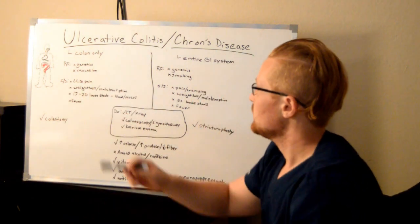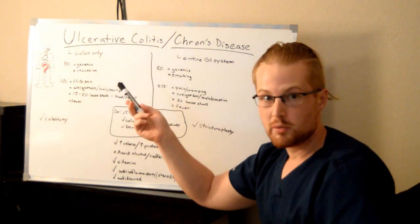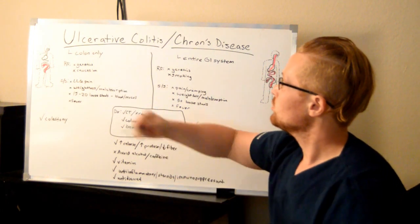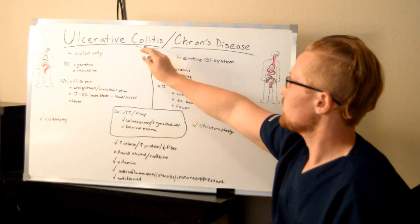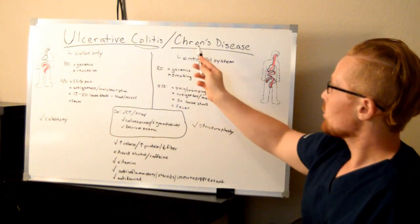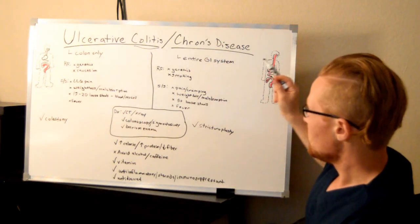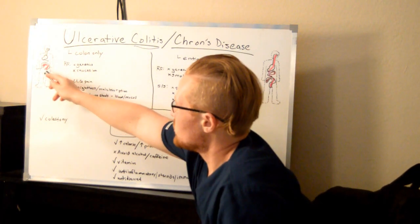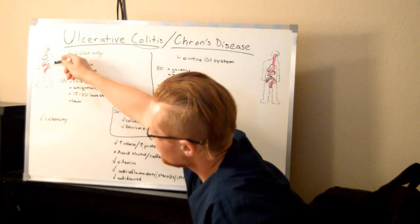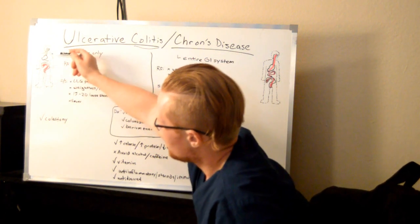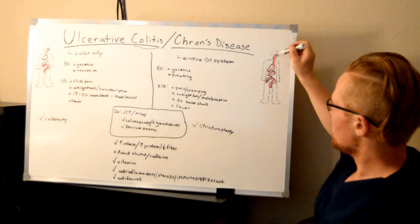When I talk about Ulcerative Colitis, the difference between the two would be that Ulcerative Colitis affects only the colon — and it says it right in the name, Colitis. Crohn's Disease, on the other hand, can affect the entire GI system. So looking over here, you can see it's just the large intestine, also known as the colon, particularly the sigmoid and beyond, whereas Crohn's Disease can affect anywhere in the GI system.